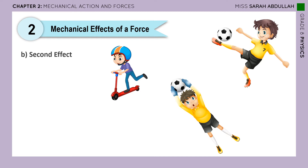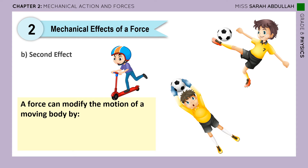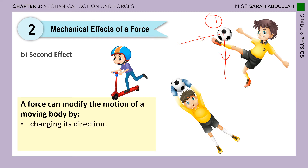The second effect is when a force modifies the motion of a body already in motion. There are three cases. First case: a ball is thrown to a player, and the player kicks it, changing its direction. So a force can modify the motion of a moving body by changing its direction. The ball was already in motion, and the kick simply modified it.